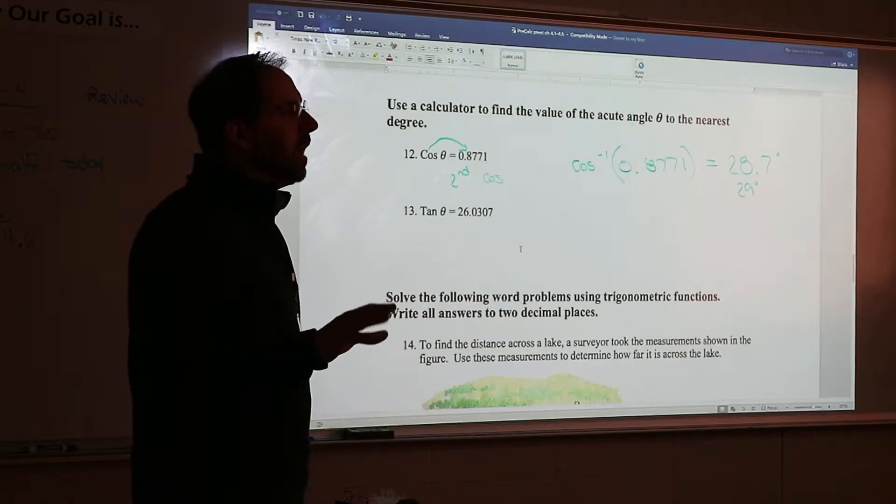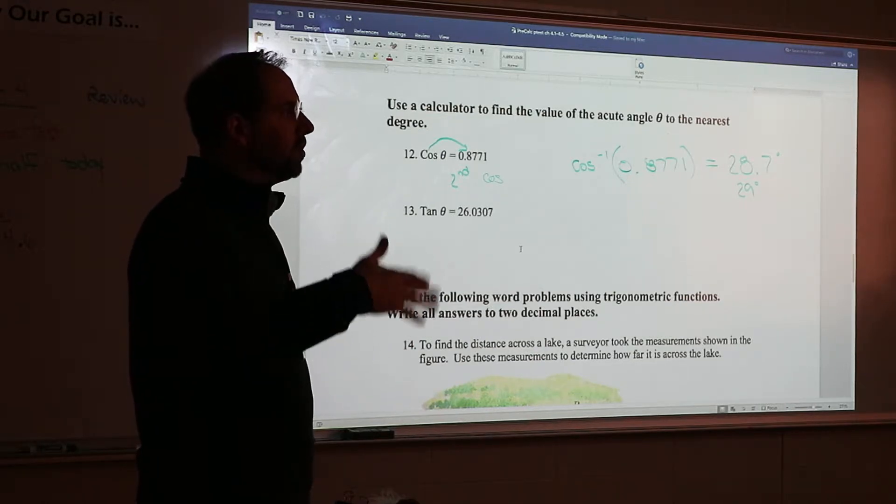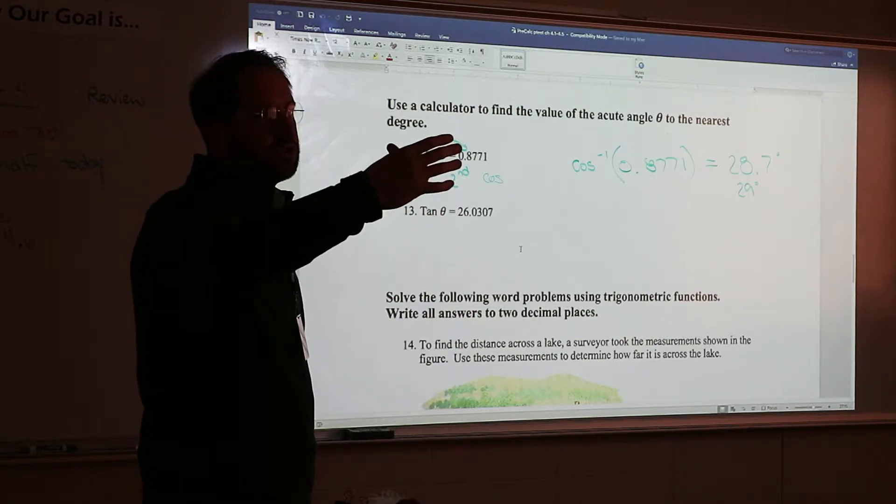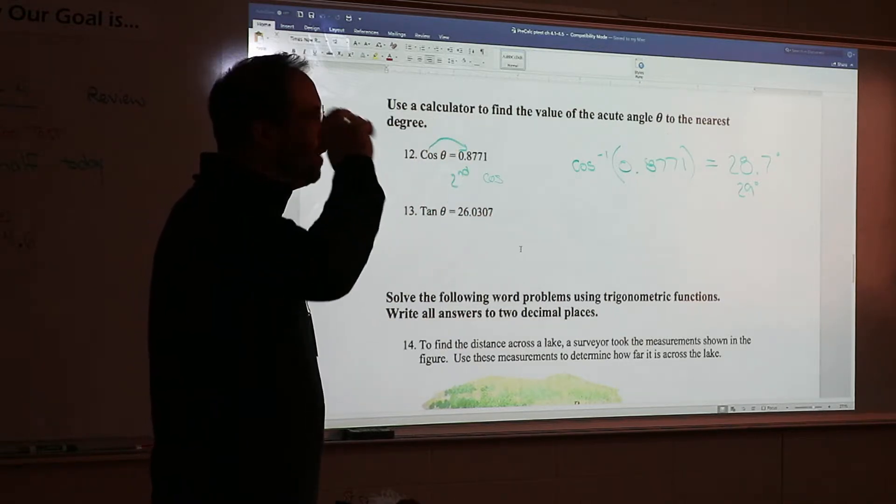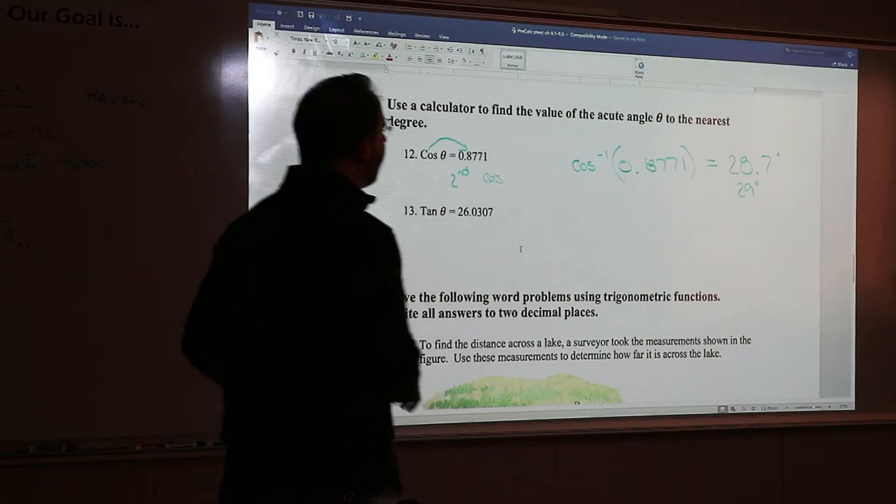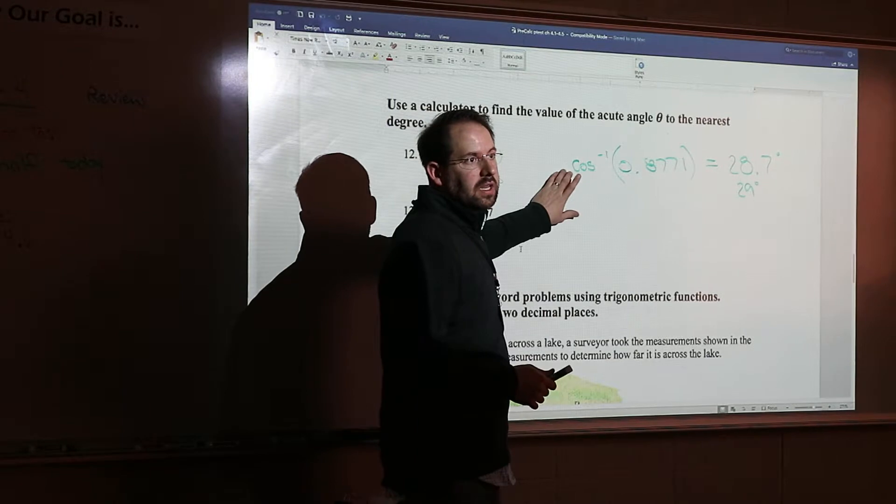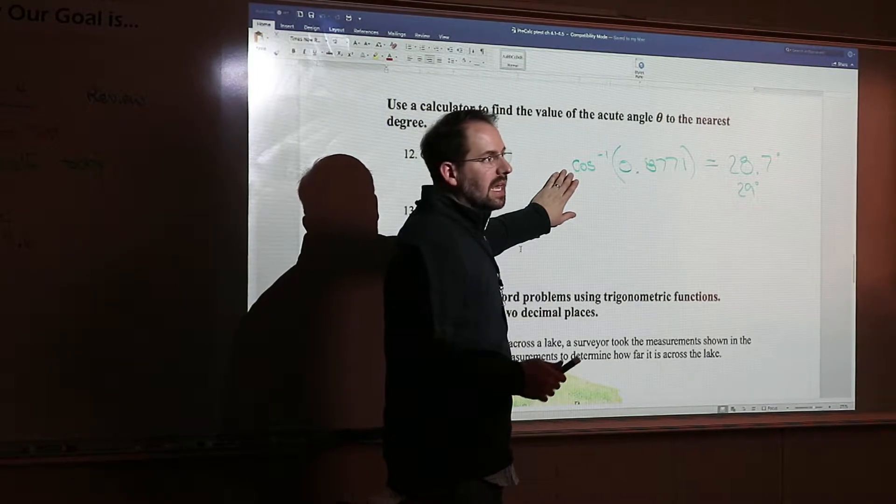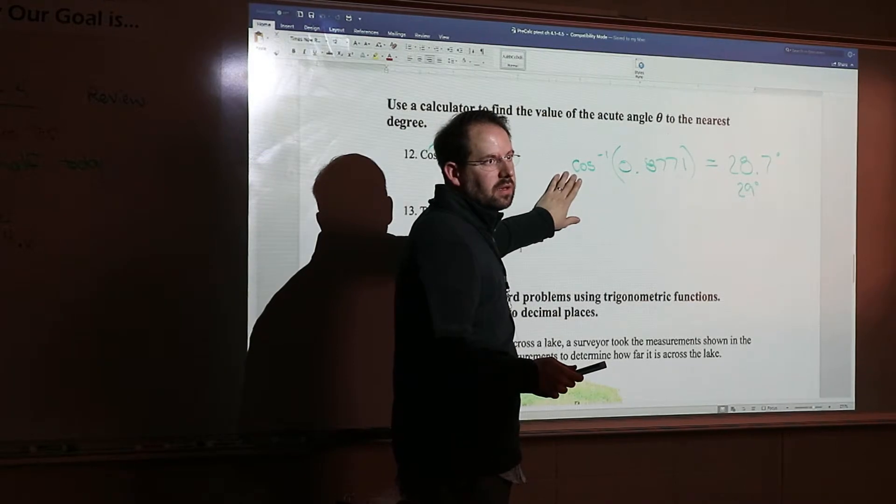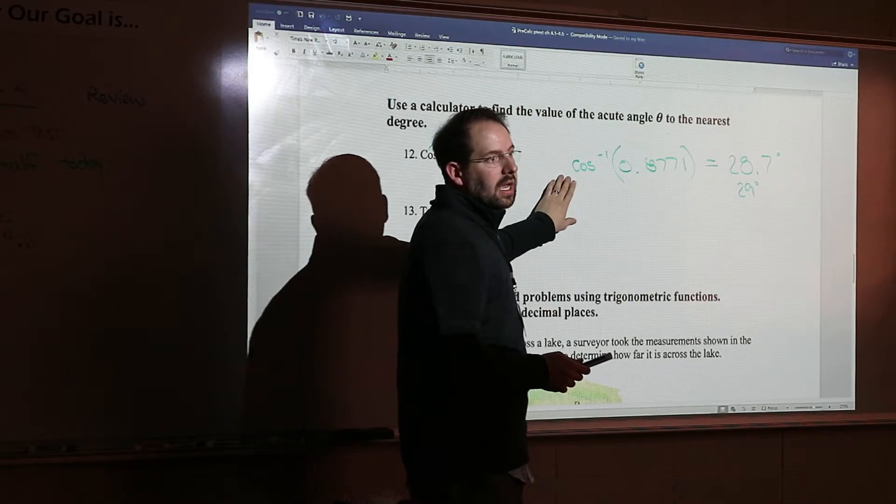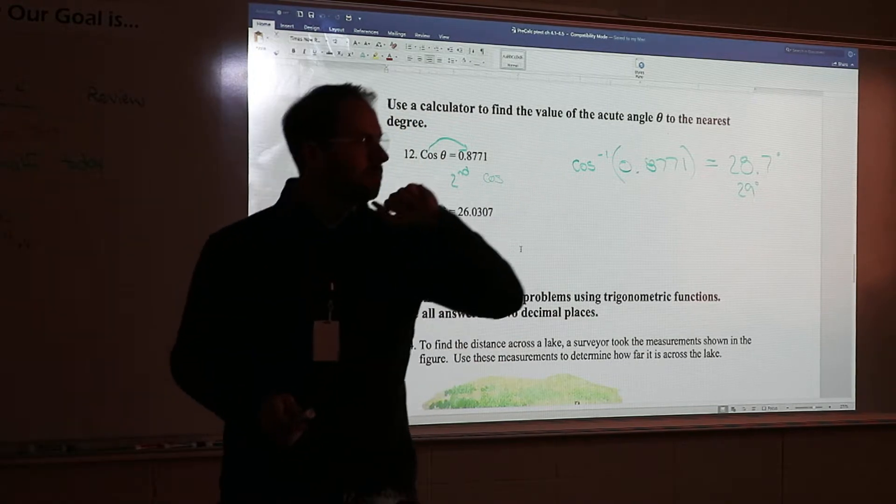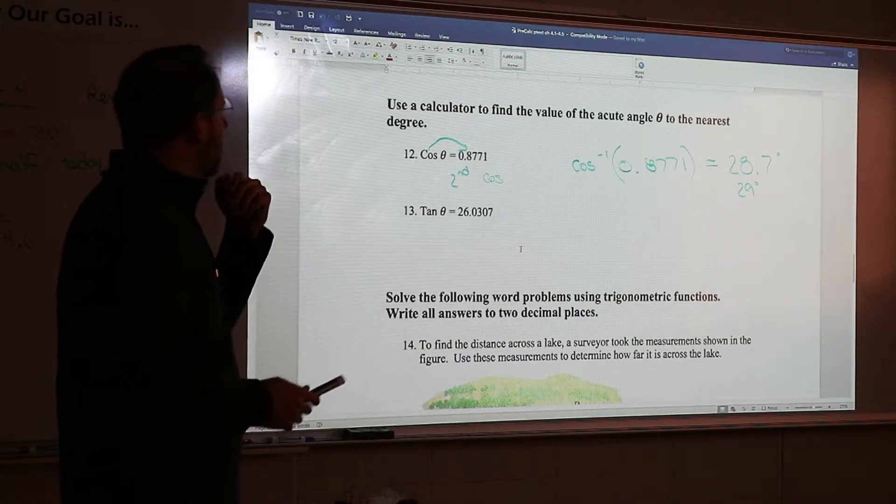On 13, now you're doing the tangent. Same exact idea, but now you're doing shift or second tangent, and it will give you the second tangent key, the inverse tangent, tangent to the negative one key. Is there anyone in this room that is struggling to get this answer, like the way that we did the first one, number 12? Is anyone struggling on the calculator, like it's not showing up, or you don't know how to type that in?